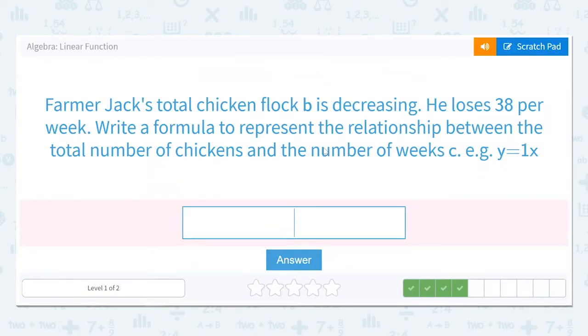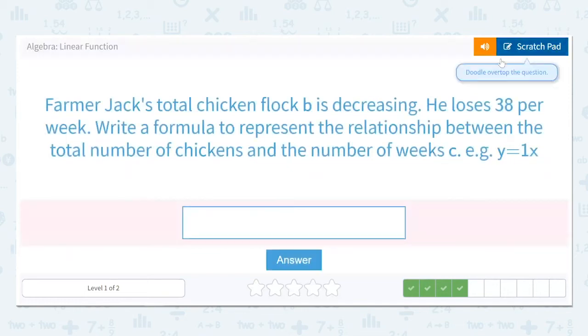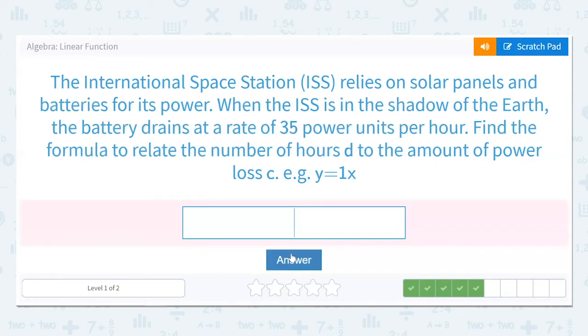Farmer Jack's total chicken flock, B, is decreasing. So that means it's going down, which means we're going to need a negative somewhere. He loses 38 per week. Write a formula to represent the relationship between the total number of chickens and the number of weeks, C. So the total number of chickens is B. Now, it's decreasing, so negative 38 birds per week. And the number of weeks we called C. So B equals negative 38C. Now, if it was increasing, we'd have positive 38. It'd be going up, positive slope. If it's decreasing, I'm going to make sure we put that negative. So B equals negative 38C.